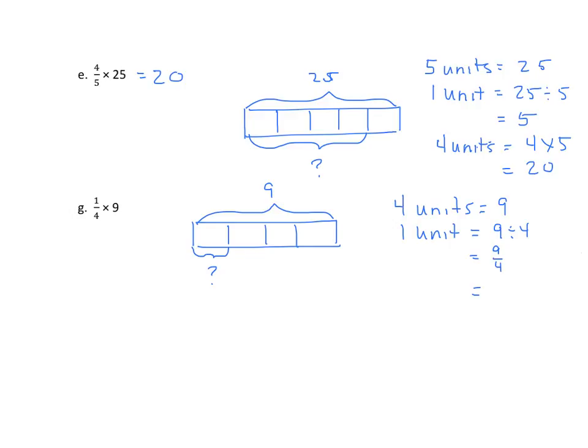And we can interpret that as a mixed number if we like, which is two and one-fourth. So one-fourth of nine, or one-fourth times nine, is two and one-fourth.